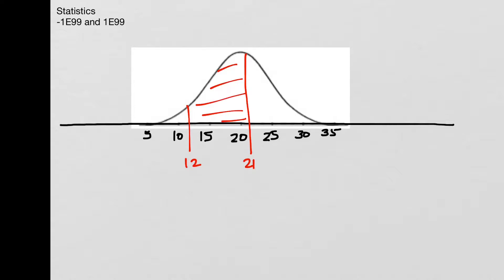I would calculate normalcdf(12, 21, 20, 5) because we can see that the mean here is 20, that's the middle value, and the standard deviation is 5.